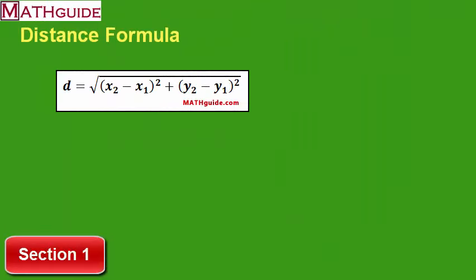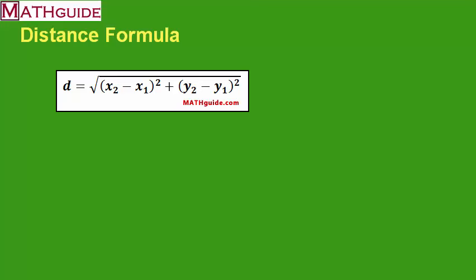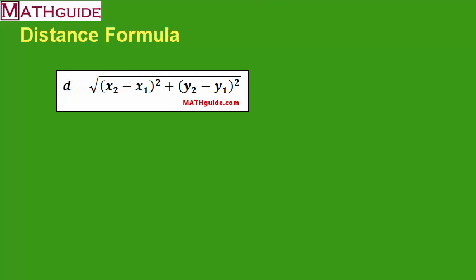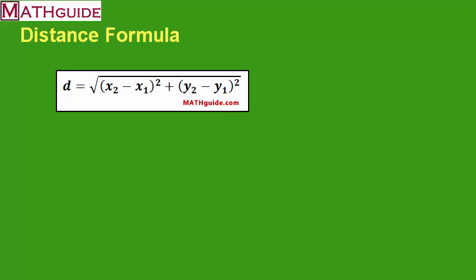This is our first section of our video. You can see here up on the screen we have the distance formula. You should notice that it does have what are called subscripts. Those little subscripts like x sub 2 and x sub 1 just indicate that we're dealing with different x values. The same thing is true for y sub 2 and y sub 1. Those subscripts are different than the powers — powers are written up high and to the right, while subscripts are written down to the lower right.